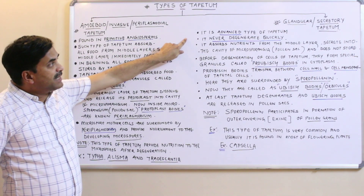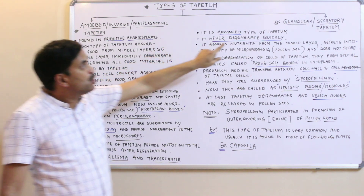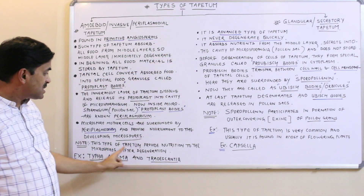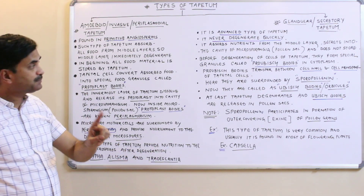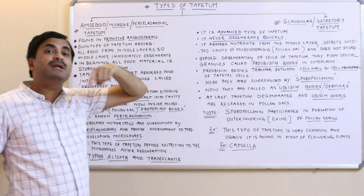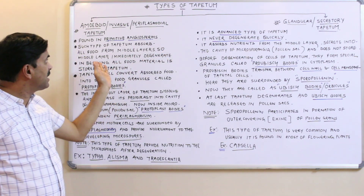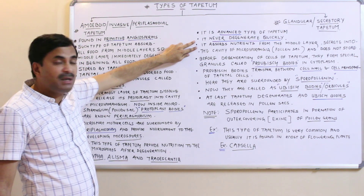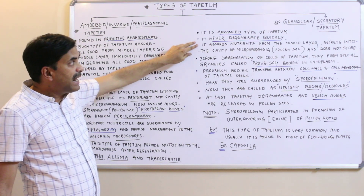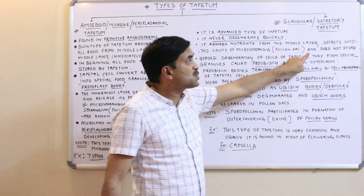The second type of tapetum is the most advanced and developed type, known as the glandular or secretory tapetum. It never degenerates quickly. It absorbs nutrition from the middle layers — exactly similar to the amoeboid tapetum, because food is stored in the parenchyma cells of the middle layers — but it secretes directly into the cavity of the microsporangia and does not store the nutrients.